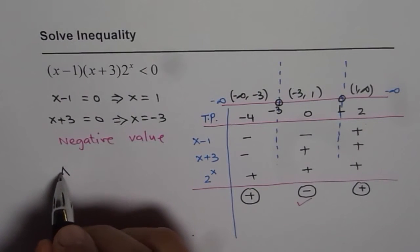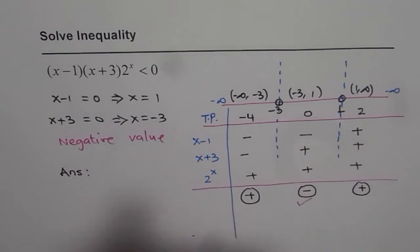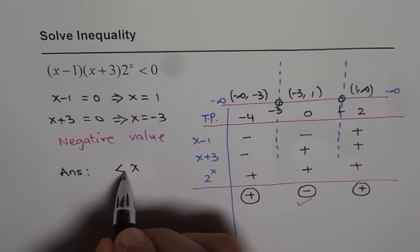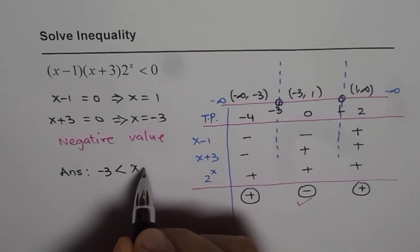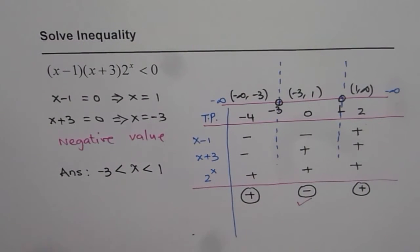So negative value is during the interval minus 3 to 1. So that is our solution. And therefore our answer is that x is greater than minus 3 but less than 1.